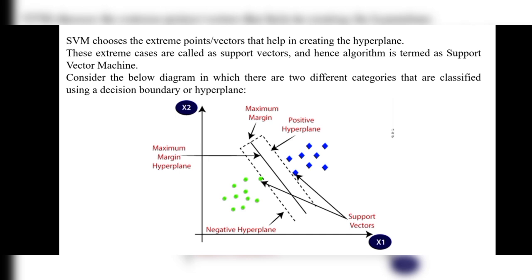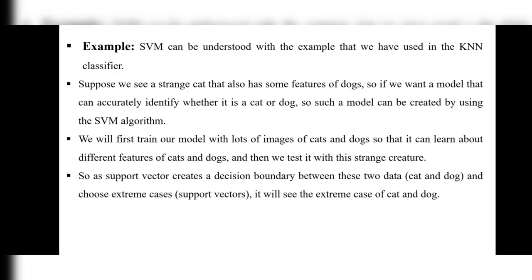We have two datasets, x1 and x2. SVM can be understood with an example similar to a KNN classifier. Suppose we see a strange cat that also has some features of a dog. If we want a model that can accurately identify whether it is a cat or dog, such a model can be created using the SVM algorithm, which classifies the features of cats and dogs.